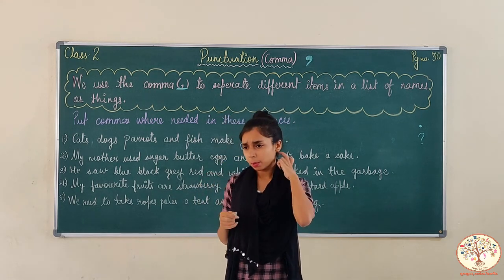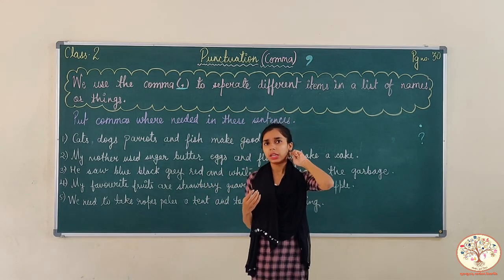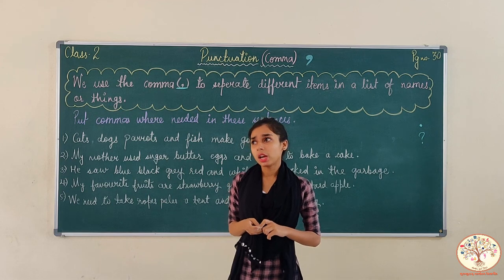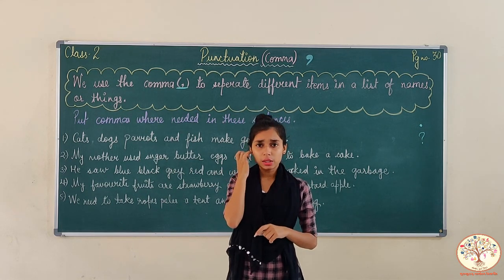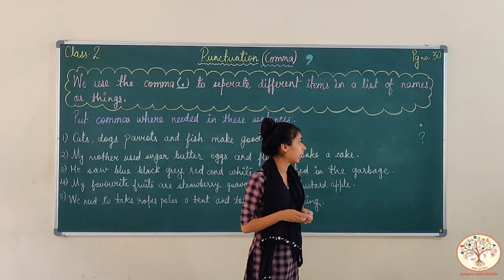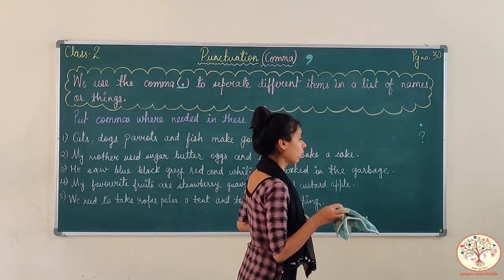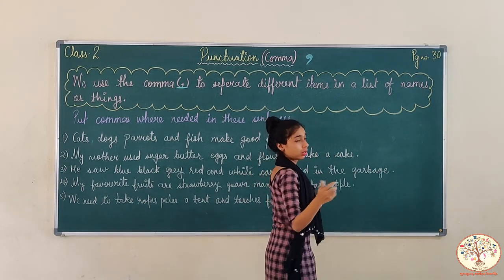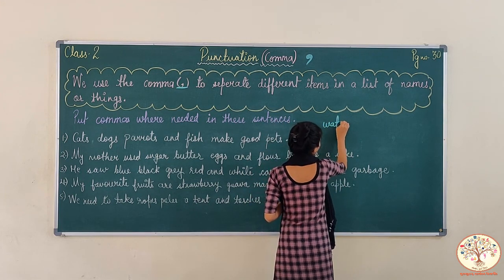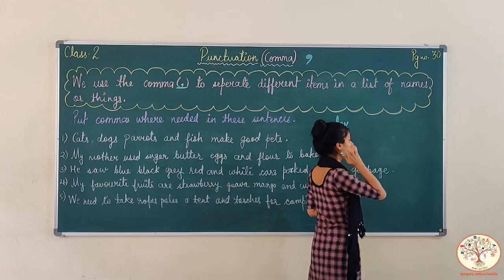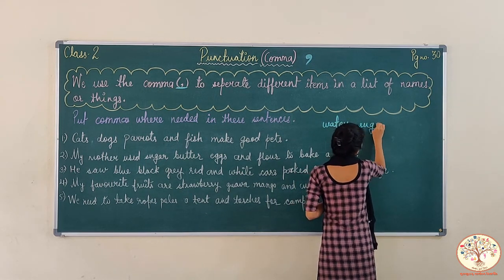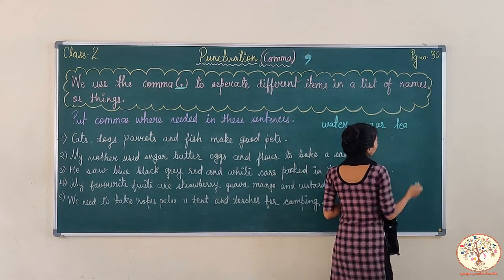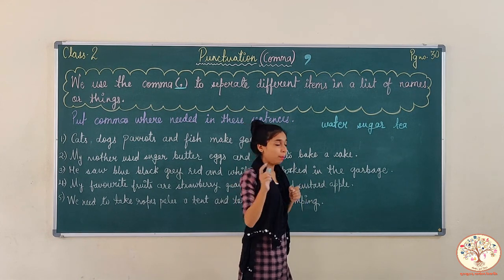Maybe you have read about this — जब हम बहुत सारी चीजों के बारे में बात करते हैं. Just like, if I ask you, 'What are the things used to make tea?' — चाई बनाने के लिए हमें क्या-क्या चाहिए? We need water, sugar, tea leaves, and milk.